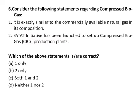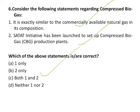Question number 6 is about compressed biogas. The first statement says it is exactly similar to commercially available natural gas in its composition — this is correct. The second says the SATAT initiative has been launched to set up compressed biogas production plants — this is also correct. Both statements are correct. Biogas is produced naturally through anaerobic decomposition from waste biomass such as agriculture residue, cattle dung, municipal solid waste and sewage. After purification and compression, it is called compressed biogas, with a pure methane content of over 95%. The SATAT initiative was launched by the government to set up compressed biogas production plants and make compressed biogas available as automotive fuel.